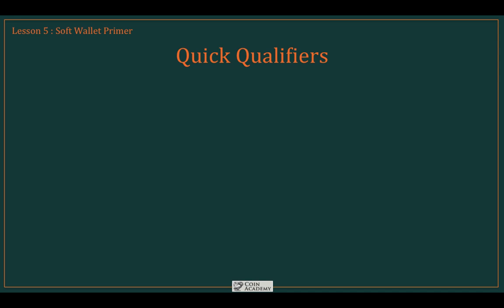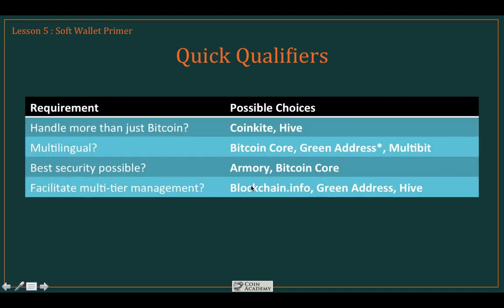For a lot of people, a few criteria will quickly narrow that range of wallets. For example, if you require a wallet that handles more than just Bitcoin, there are only two choices on that list: CoinKite and Hive. If you require a multilingual wallet, there are only three options: Bitcoin Core, GreenAddress, and Multibit. GreenAddress doesn't currently have a multilingual version, but they promise one is coming very shortly and is under development.